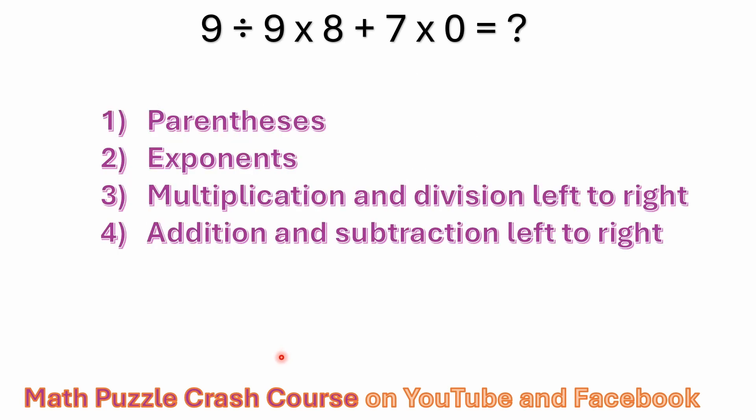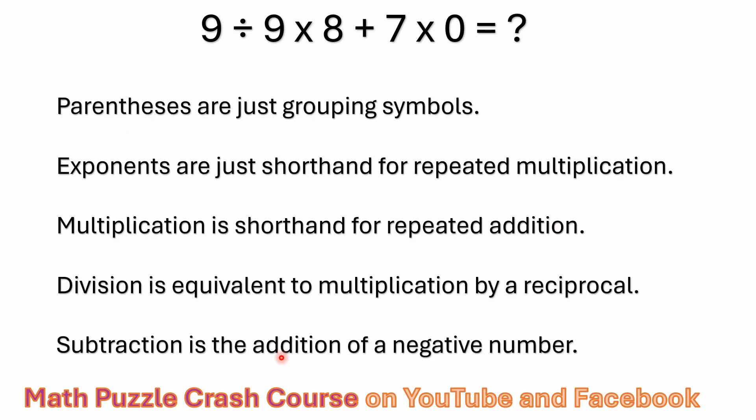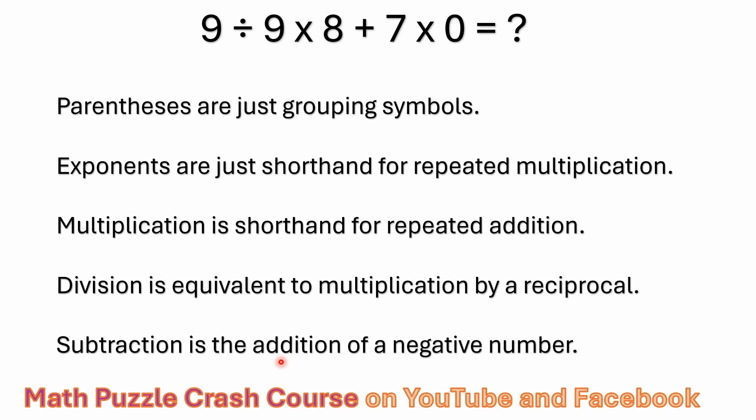So once again, there's only four steps, the parentheses, the exponents, multiplication and division left to right, addition and subtraction left to right. Again, parentheses are just grouping symbols. Exponents are shorthand for repeated multiplication. Multiplication is shorthand for repeated addition. Division's equivalent to multiplication by a reciprocal. Subtraction is the addition of a negative number. So remember these concepts, if you're struggling with the order of operations and problems like these, where you have mixed operations and just realize that you don't need to have parentheses or brackets to do these. If this has been helpful to you, please consider liking, sharing, subscribing. And I hope to see everybody in the next video.